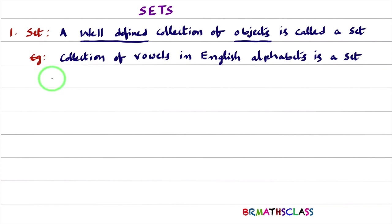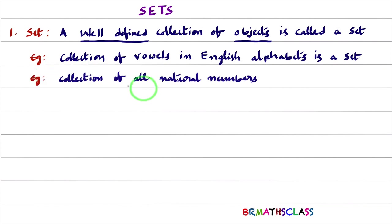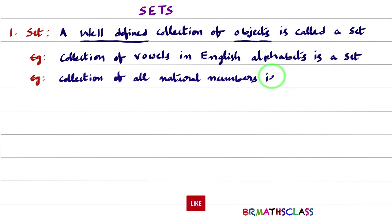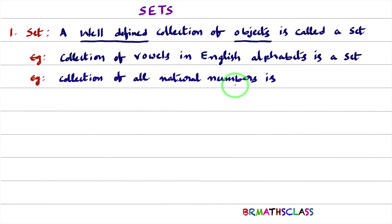Now let's understand with one more example. Collection of all natural numbers — natural numbers are well-defined. What are the natural numbers? 1, 2, 3, 4, and so on. So natural numbers are well-defined, and therefore collection of all natural numbers is a set.